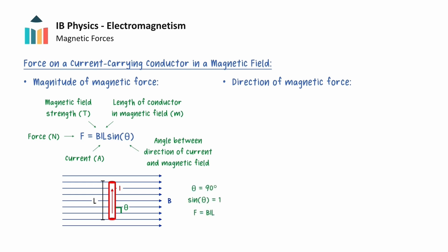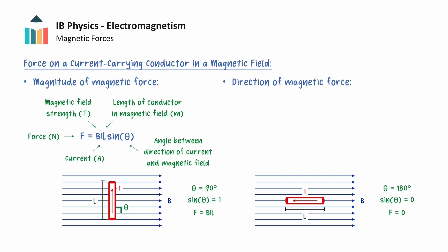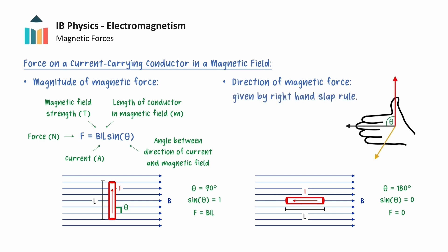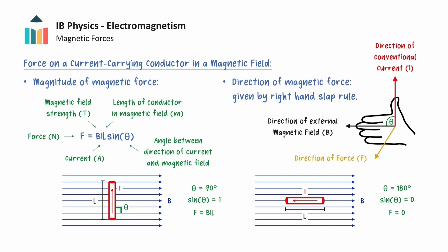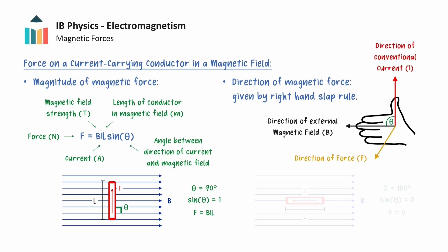Therefore, the force on a straight current-carrying conductor is maximised when the conductor is perpendicular to the magnetic field, and is zero when the conductor is parallel to the magnetic field. To find the direction of the force, we can use the right-hand slap rule introduced earlier. The only difference this time is that the right thumb will point in the same direction as the conventional current. Along with pointing the four fingers in the direction of the external magnetic field, the direction away from the palm of the right hand will give the direction of the magnetic force on the current-carrying conductor. In the example shown, we point our thumb upwards to match the current, and point our four fingers to the right to match the external magnetic field, and we see that the direction away from the palm points into the screen, indicating the direction of the force on this conductor.